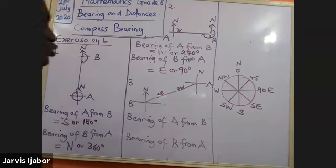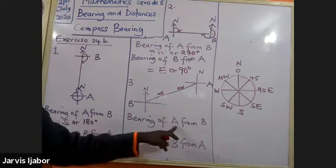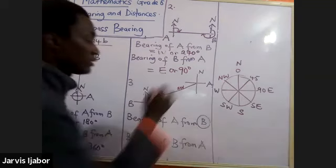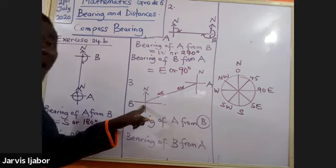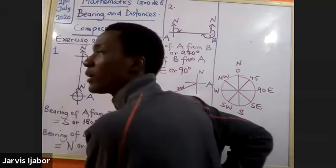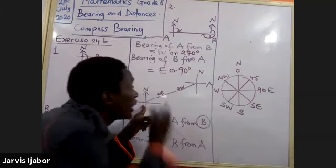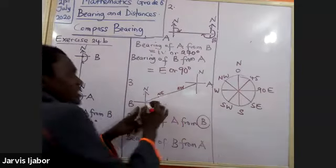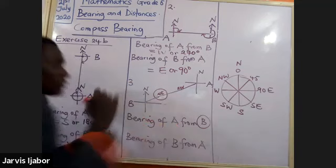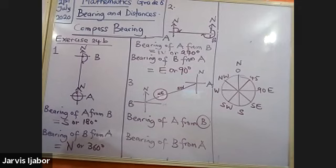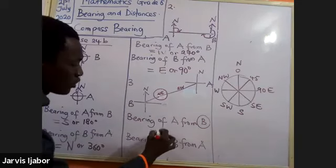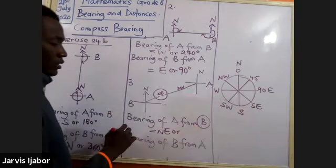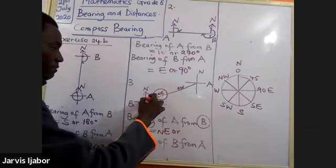Now the bearing of A from B: the reference is B. I look at B and ask, where do I see A? I'm seeing A in the north-east direction. So the bearing of A from B is north-east, or 45 degrees.